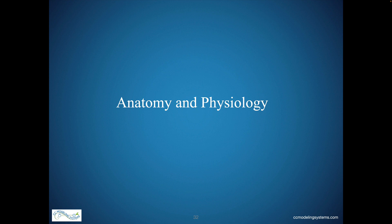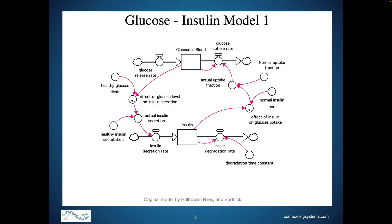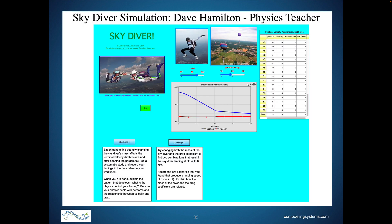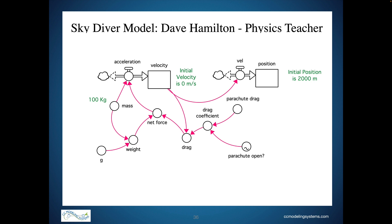The human body is full of feedback systems and is an ideal subject for system dynamics models. A glucose-insulin model was used with groups of high school students to study this homeostatic process — originally created by Matthew Halbauer, Rebecca Niles, and Tad Sudnik. Physics is also a fertile subject for system dynamics models. David Hamilton, a previous high school physics teacher at Franklin High School in Portland, Oregon, built a simulation to help students better understand the dynamics of changing position, velocity, and acceleration during skydiving.